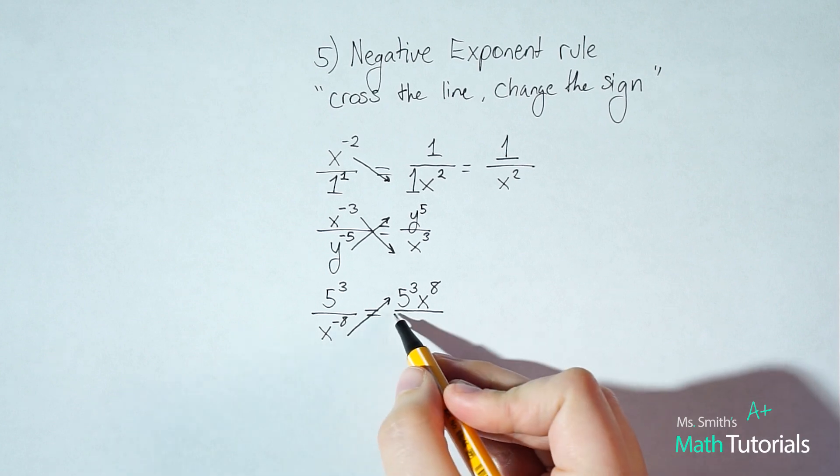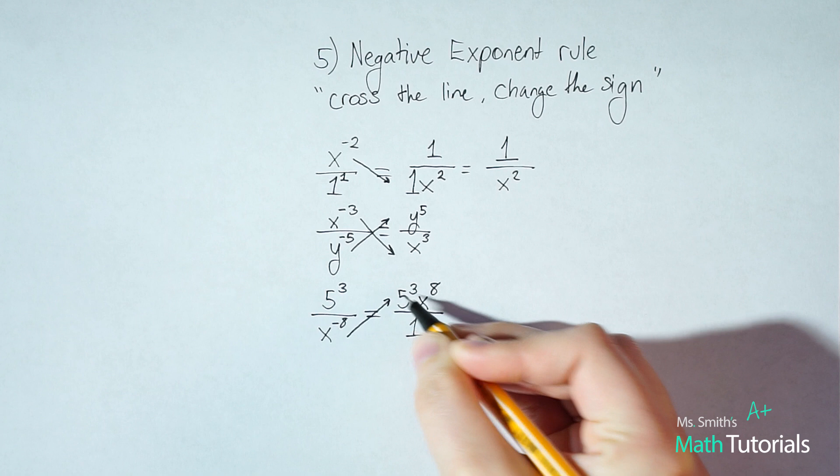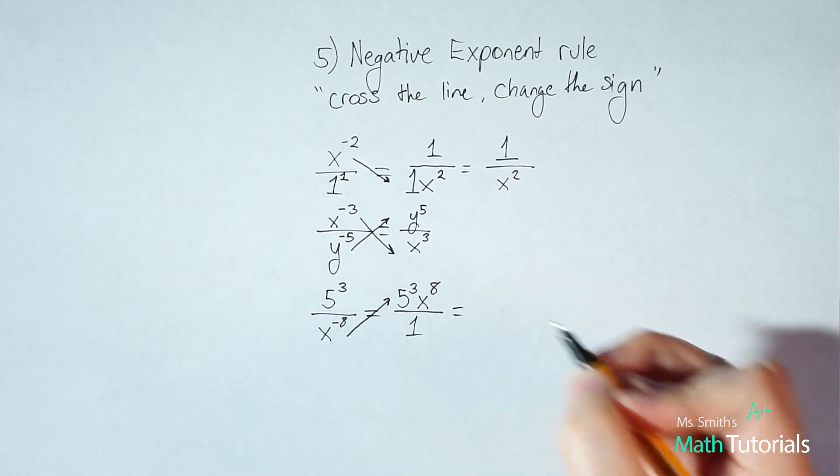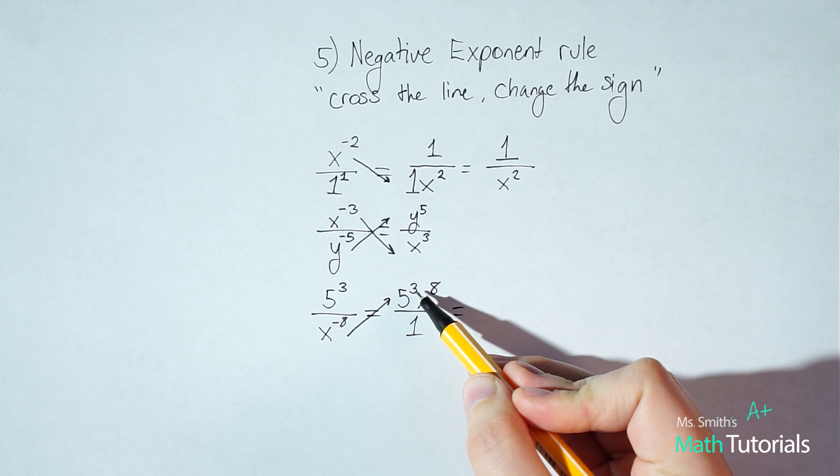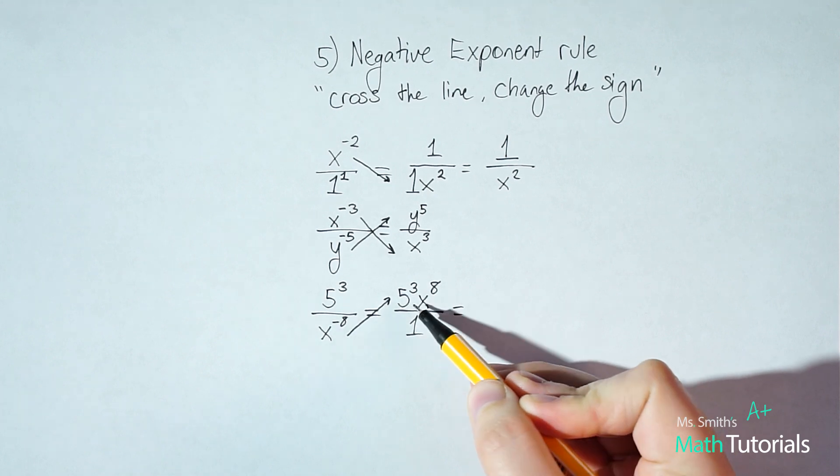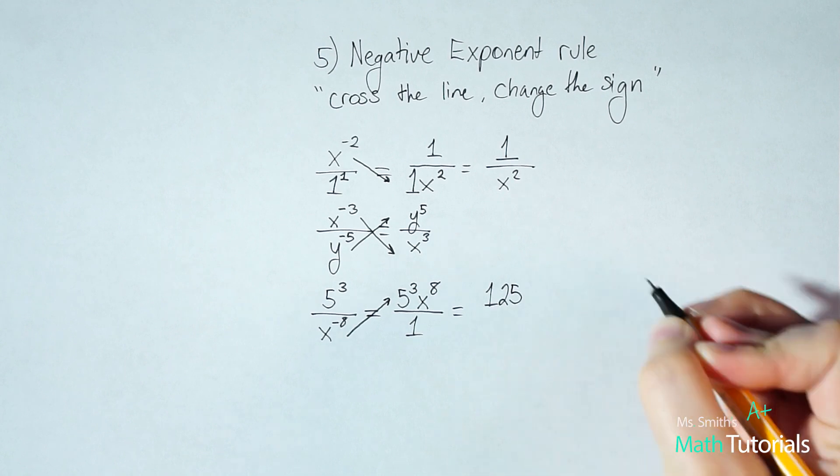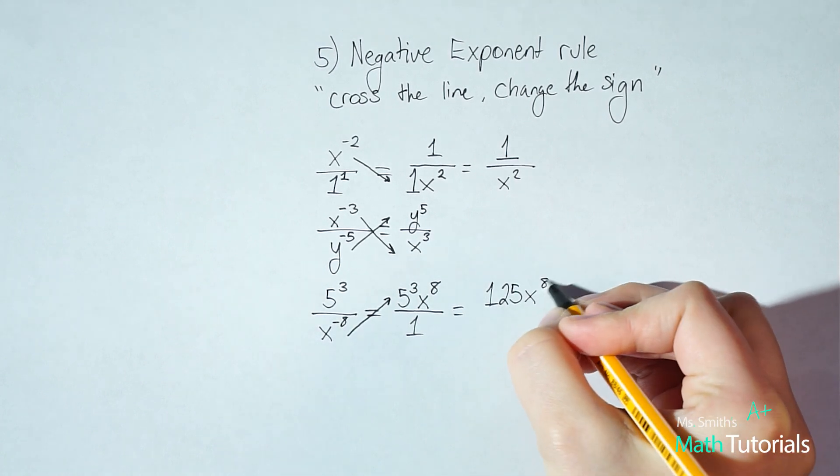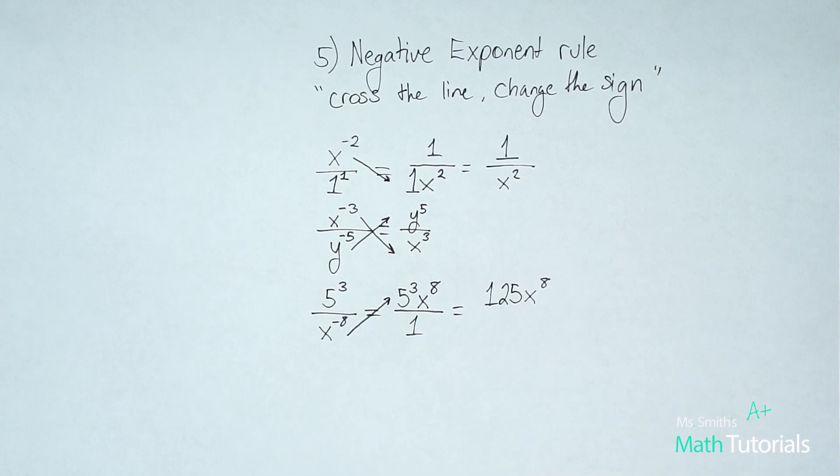And you'll notice I always want to write this in the most simplified version possible. We talked about that in my other videos. So remember, this is not five times three, but rather five times five times five, which would be 125 x to the eighth. If you want to write it over one, you can, but we don't need to.